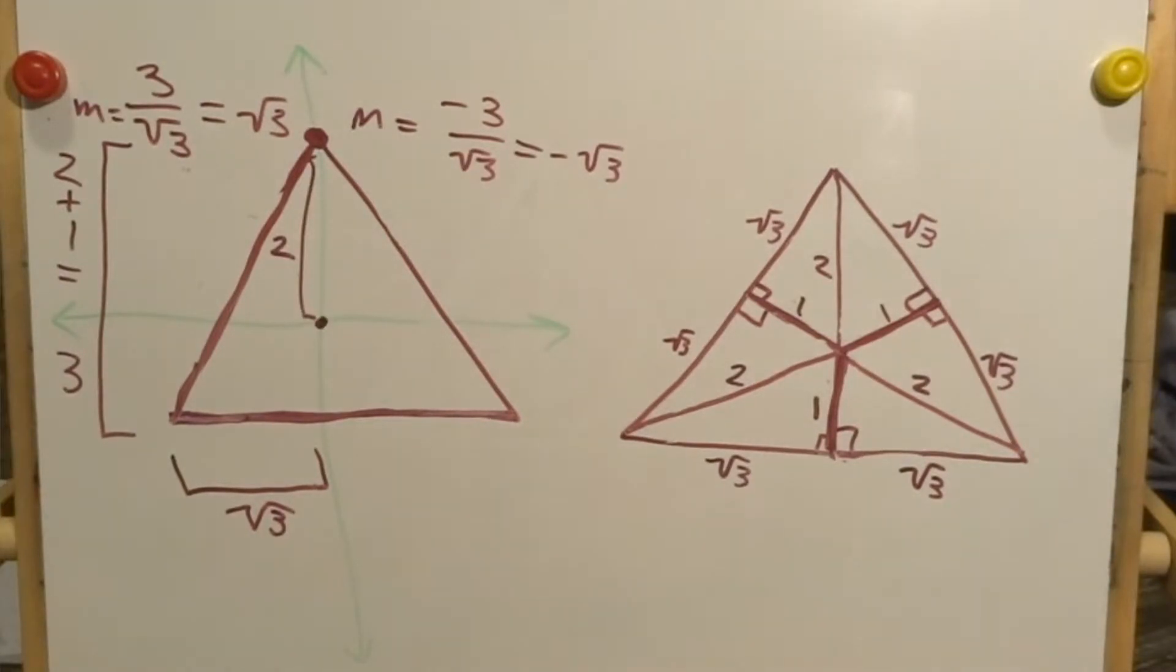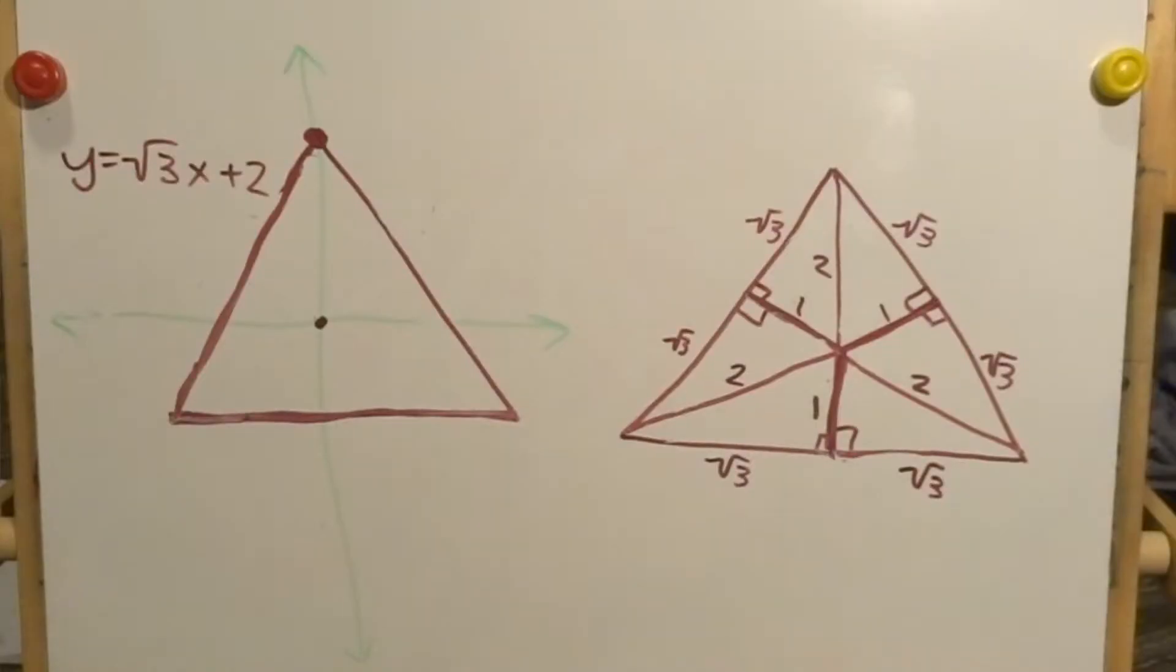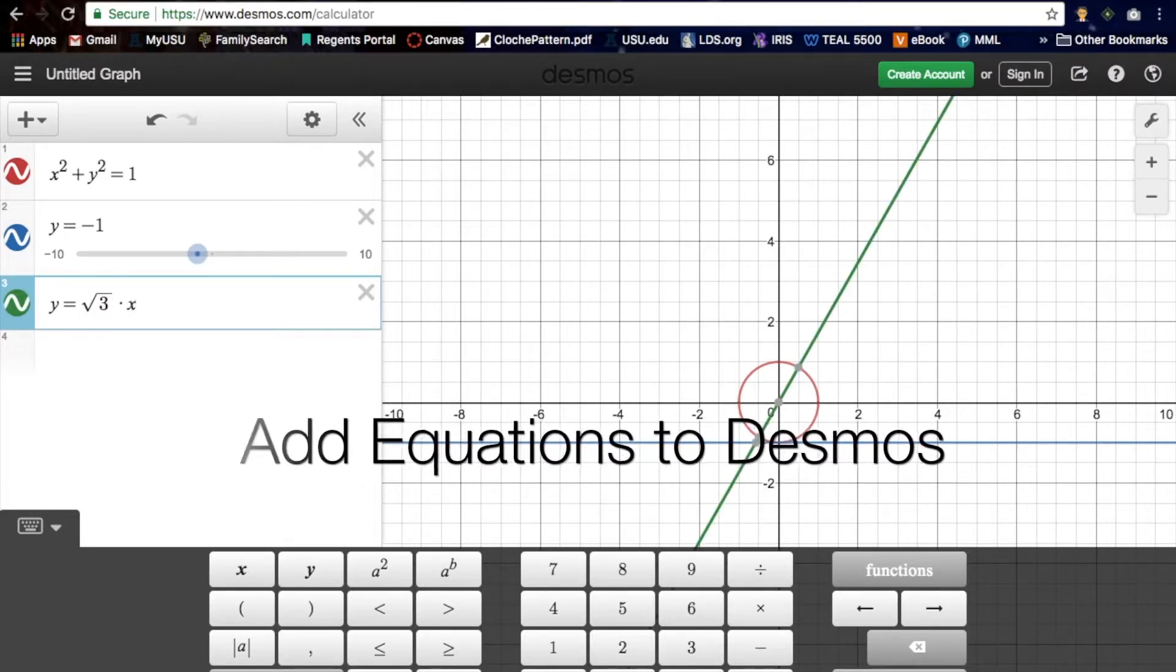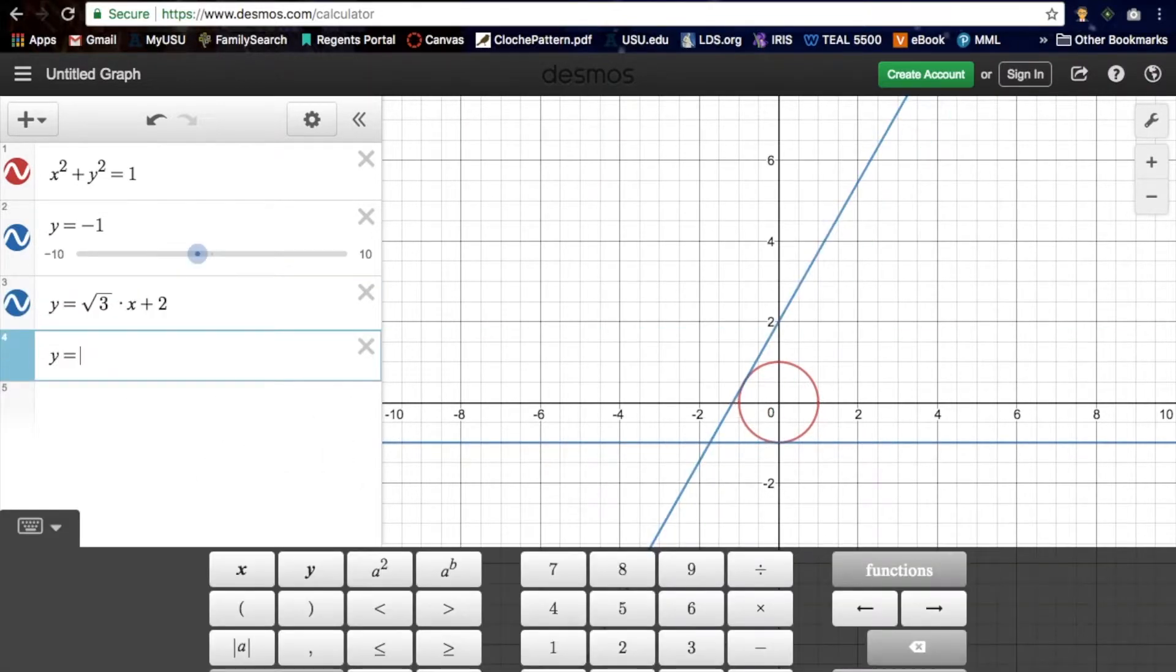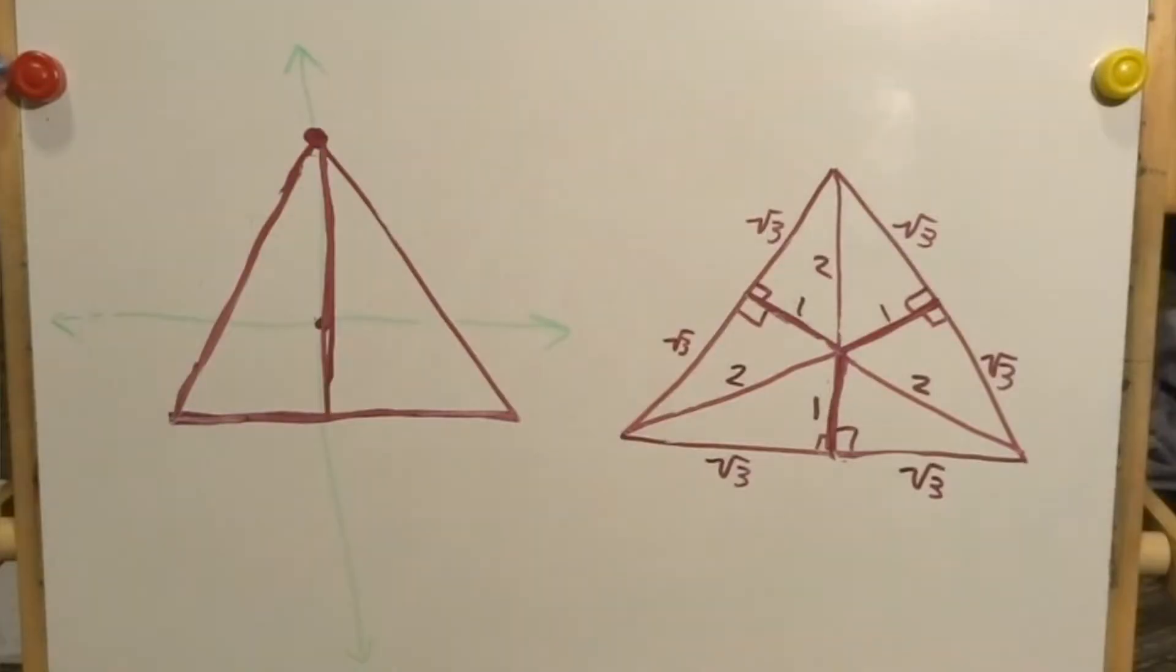But also, these lines don't go through the origin, they pass through this point up here, which gives them a y-intercept of two, because we decided that this is the origin. So those equations are going to be y equals the square root of three times x plus two, and y equals negative root three times x plus two. And last but not least, but actually the easiest, we have the vertical line that represents the elder wand. And that line is just along the y-axis, so its equation is x equals zero.